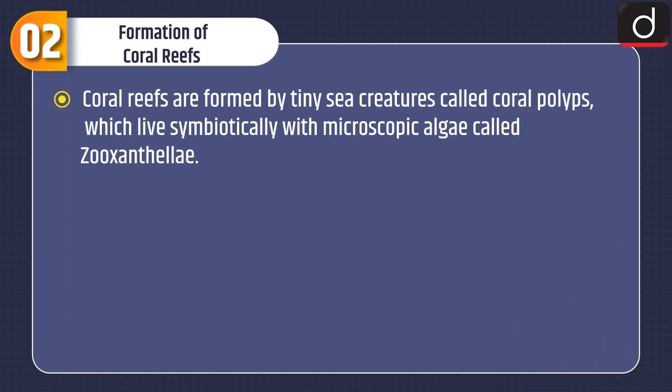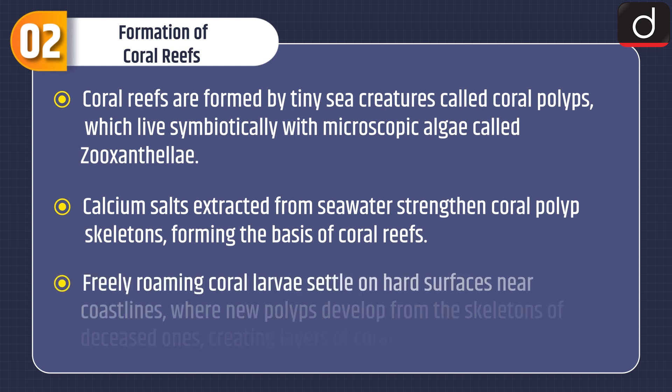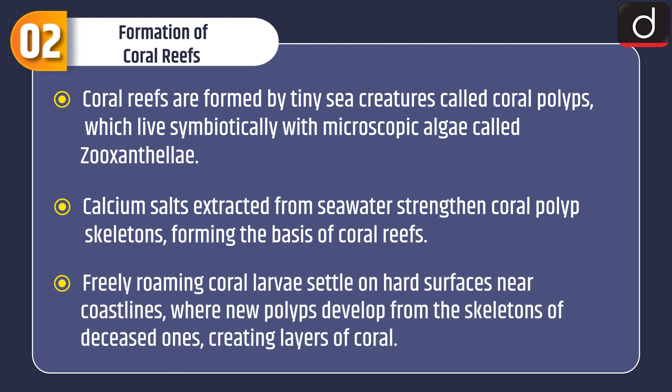Coral reefs are formed by tiny sea creatures called coral polyps, which live symbiotically with microscopic algae called zooxanthellae. Calcium salts extracted from sea water strengthen coral polyp skeletons, forming the basis of coral reefs. Freely roaming coral larvae settle on hard surfaces near coastlines, where new polyps develop from the skeletons of deceased ones, creating layers of coral.